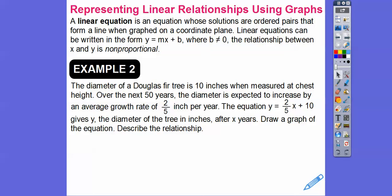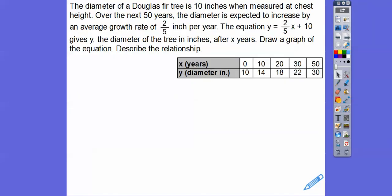The diameter of a Douglas fir tree is 10 inches when measured at chest height. Over the next 50 years, the diameter is expected to increase at an average rate of 2/5 inch per year. The equation y equals 2/5 x plus 10 — that plus 10 is the starting diameter — gives y, the diameter after x years. If we plug in 0: 2/5 times 0 is 0, plus 10 is 10, meaning it started at 10 inches. After 10 years: 5 goes into 10 twice, 2 times 2 is 4, plus 10 gives 14.